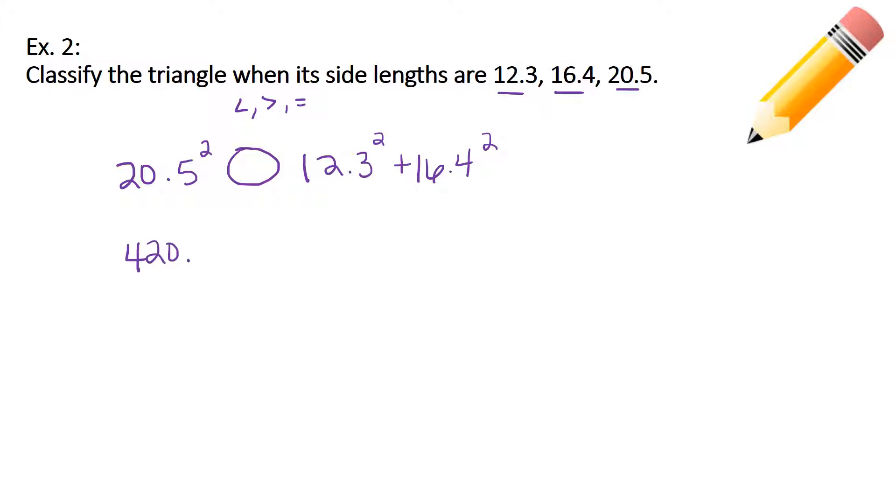If I type 20.5 and I square it in my calculator, I would get 420.25. I'm leaving that circle so I know to fill it in. When I type in 12.3 squared, I get 151.29. And 16.4 squared is 268.96. Now the last step then would be to combine what's on the right-hand side there. I'm just going to bring everything else down, even my circle so I know to fill that in. And 151.29 plus 268.96 in my calculator tells me that I get 420.25. Now if we look at these two numbers, 420.25 and 420.25, we see that they are the same number, so we would put an equal sign in there. Equal sign tells me that I have a right triangle.